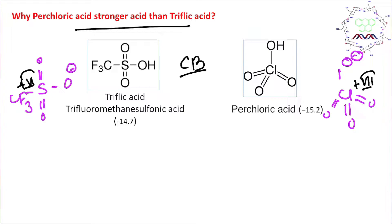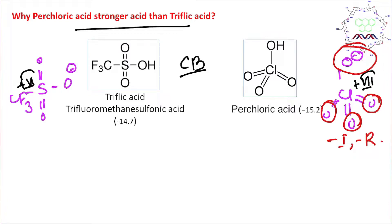If an element is more electronegative, it can withdraw or hold electron density towards itself. When it gets electron density, it is stabilized, and delocalized electrons further stabilize it. For perchlorate, the O⁻ unit negative charge is stabilized by three electronegative oxygen atoms, each having both −I and −R effects. In triflic acid, two oxygens do a similar job, but there is additionally one CF₃ group with only a −I effect.